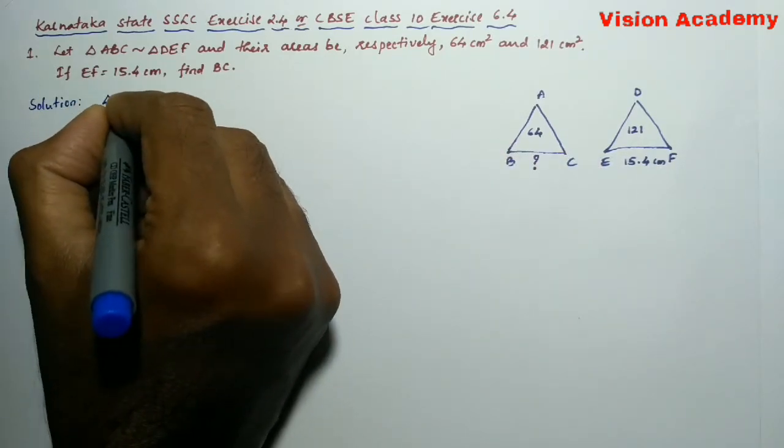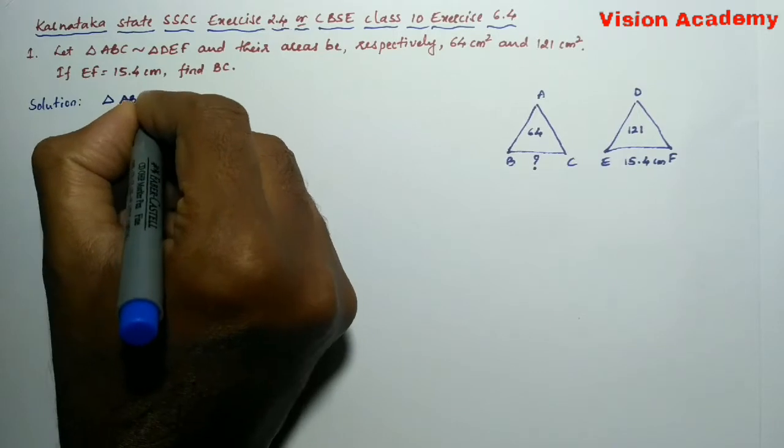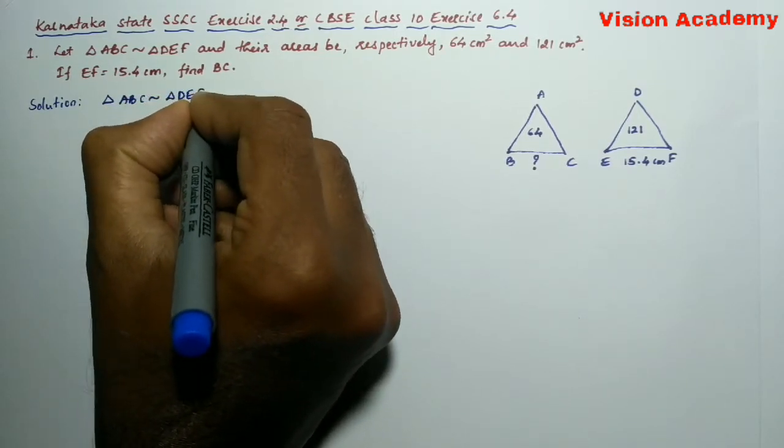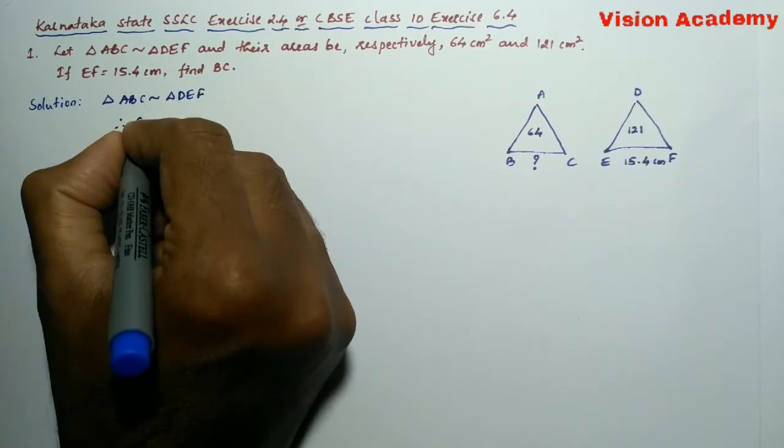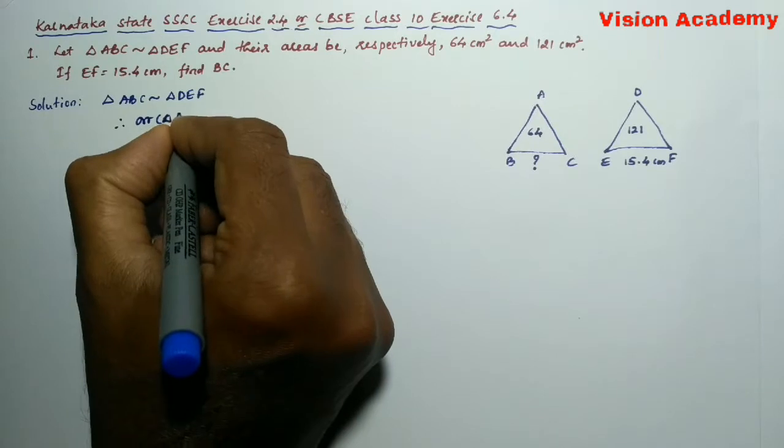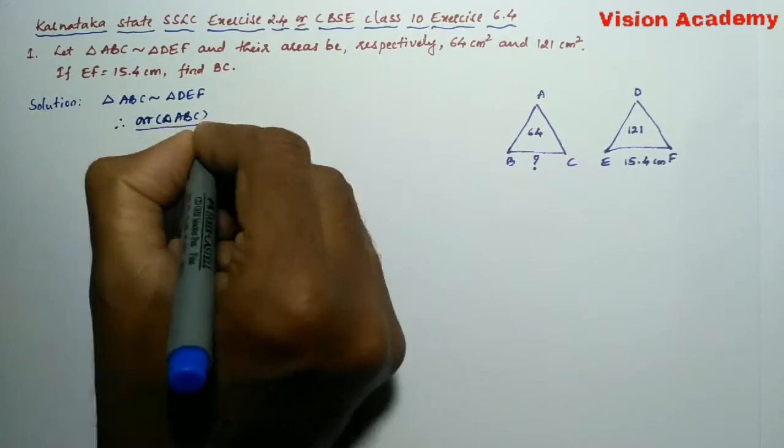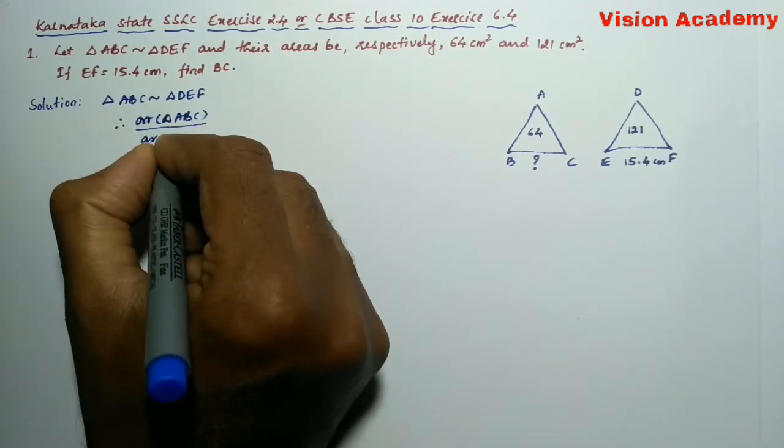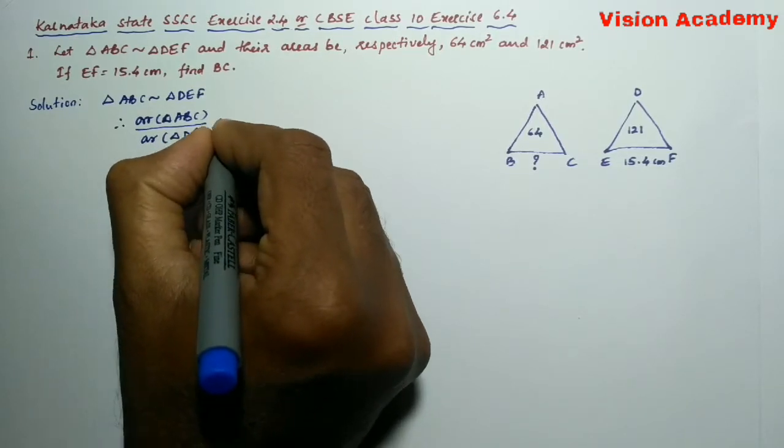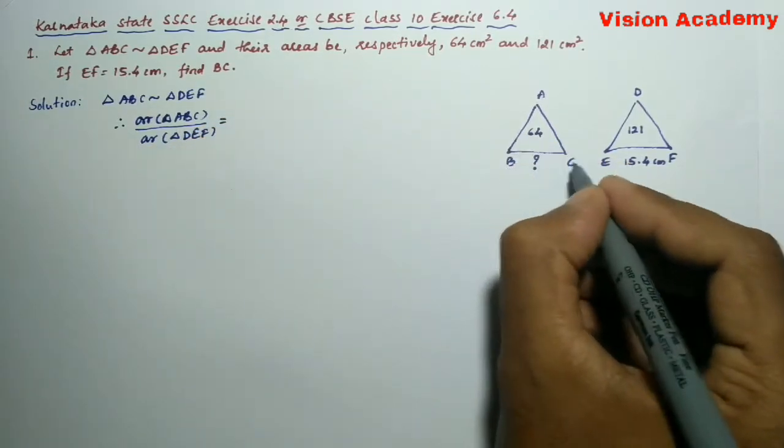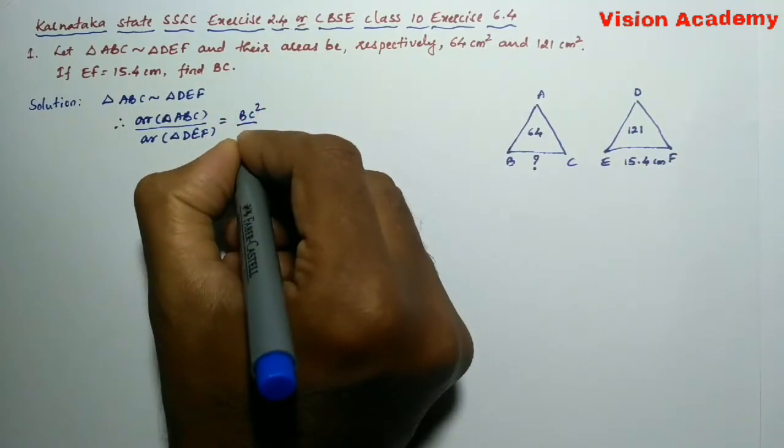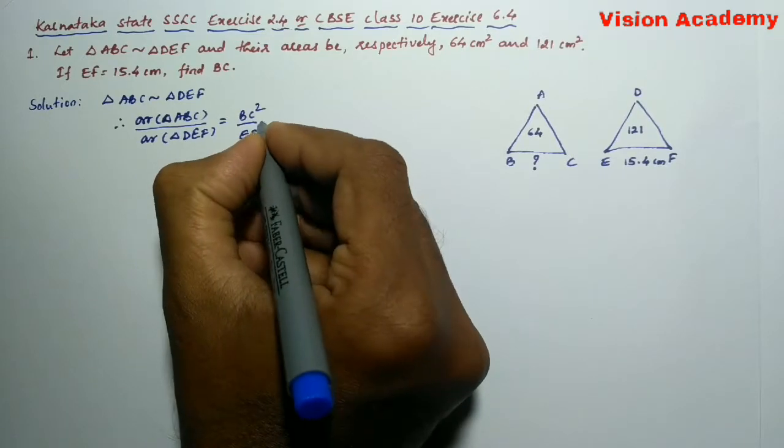Here triangle ABC is similar to triangle DEF. Therefore, area of triangle ABC divided by area of triangle DEF is equal to BC² divided by EF².